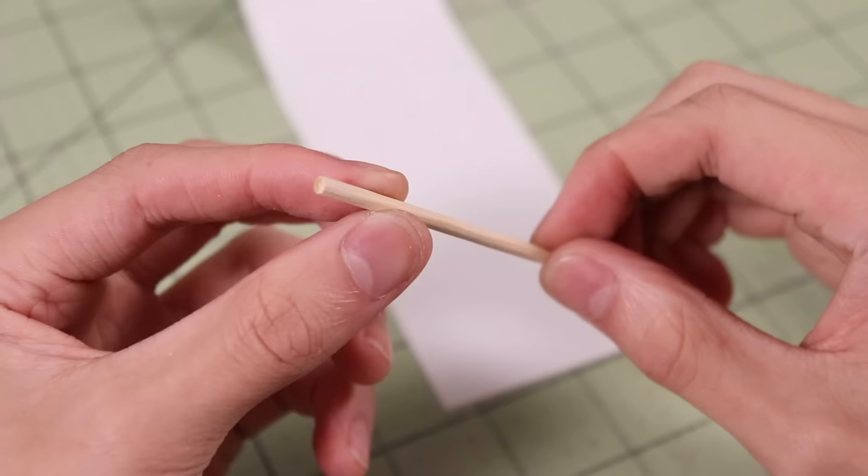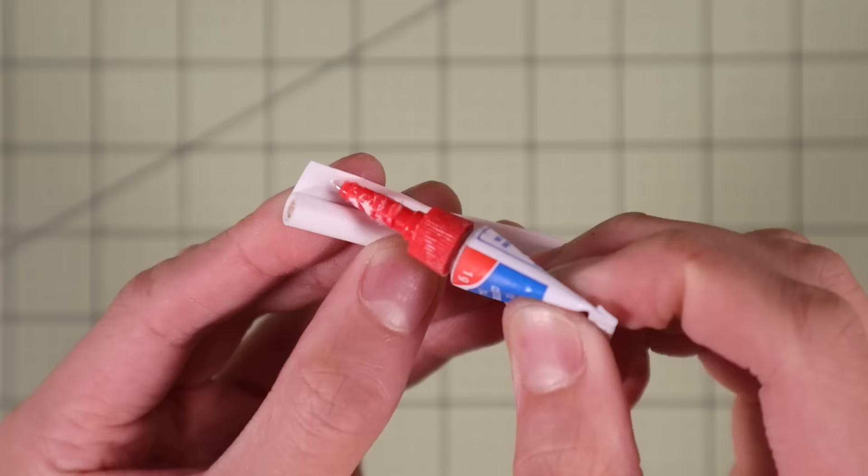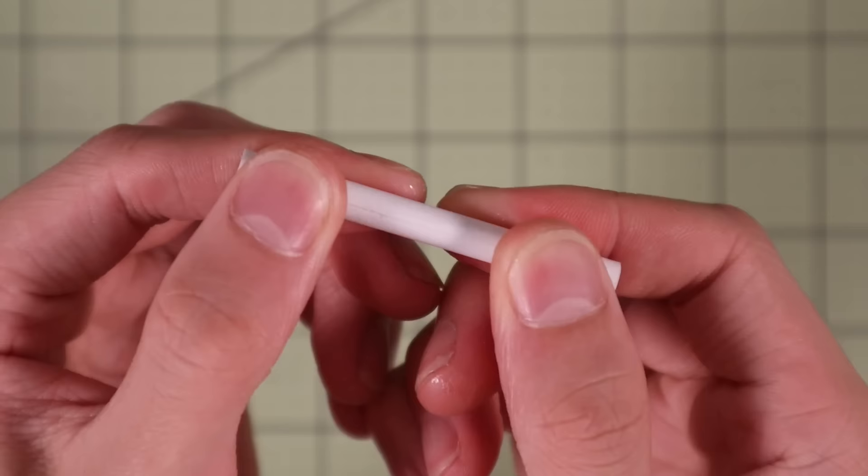Next we gotta make the bullet, which is that thing that's going to shoot out of the web shooter and drag all of that string behind it. For that I'm simply going to wrap some paper around a wooden skewer.